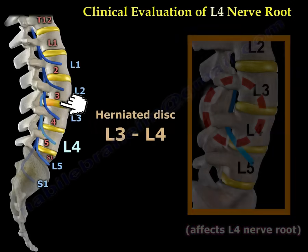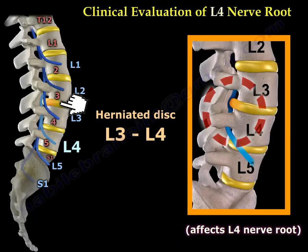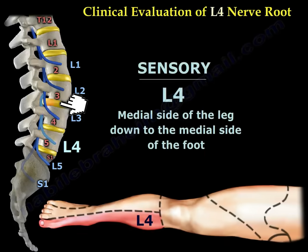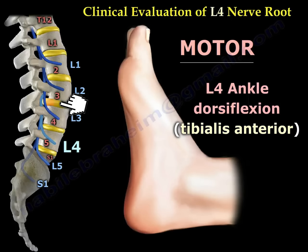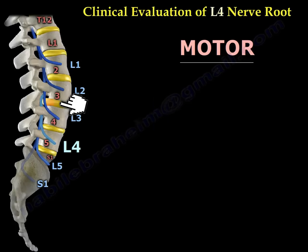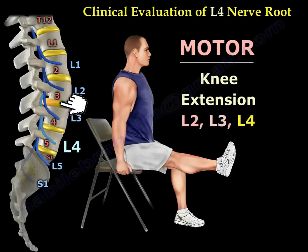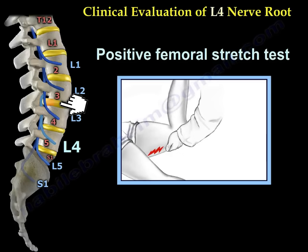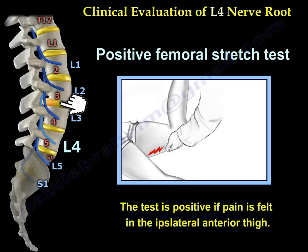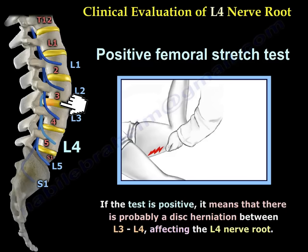A herniated disc between L3 and L4 will affect the L4 nerve root. The sensation of L4 is illustrated in this diagram to be in the medial side of the leg down to the medial side of the foot. The L4 motor will be ankle dorsiflexion, testing the tibialis anterior, and knee extension. A positive femoral stretch test can also be seen in L4 nerve root involvement — the test is positive if pain is felt in the ipsilateral anterior thigh, indicating a probable disc herniation between L3 and L4 affecting the L4 nerve root.